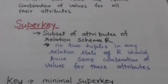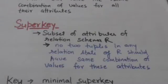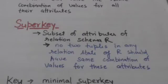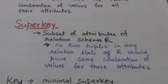A super key of relation schema R is a subset of attributes of a relation schema R with the property that no two tuples in any relation state of relation schema R should have the same combination of values for these attributes.